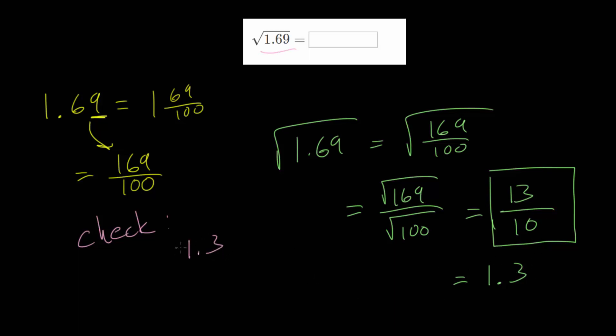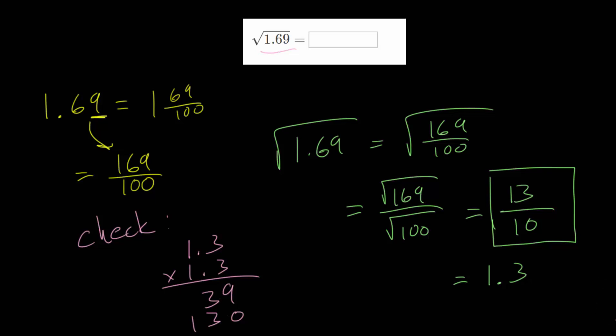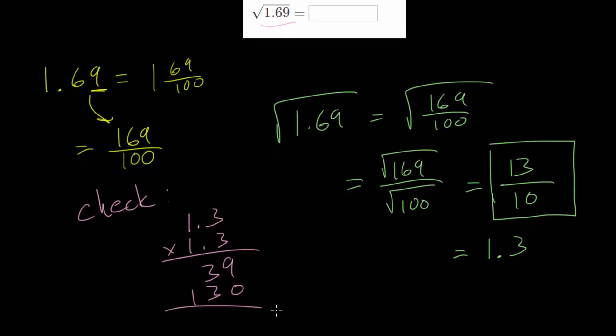So let's do 1.3 times 1.3. So we multiply 3 by 3, and we get 9. 3 times 1 is 3. We put a 0 to move one place over. We do 1 times 3, which is 3. 1 times 1, which is 1. Let me make just a bit more room here. And we can add the columns now. 9 and 0 makes 9. 3 and 3 makes 6. And we bring the 1 down.